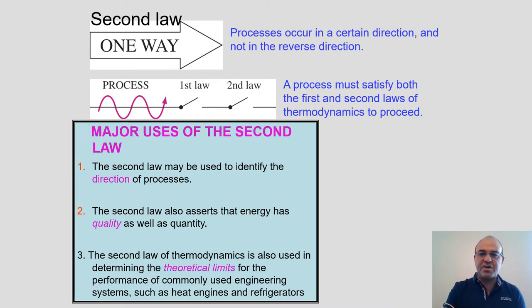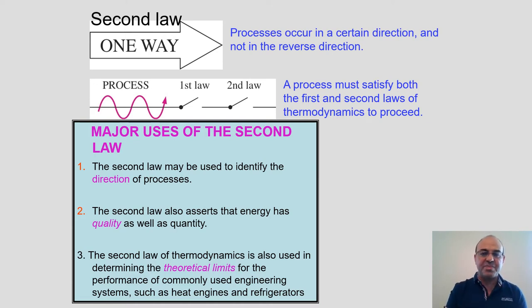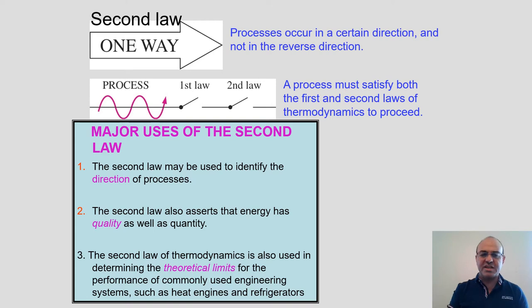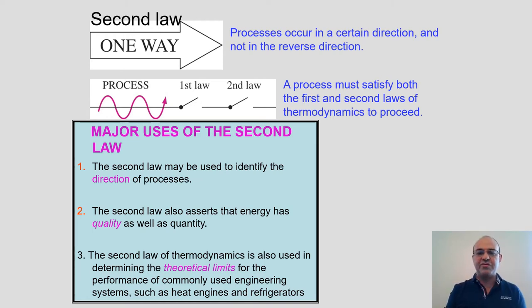The second law tells us that processes occur in a certain direction and not in the reverse direction. For a process to occur, both the first law and the second law of thermodynamics must be satisfied, otherwise the process will not proceed. The major uses of the second law are: first, to identify the direction of processes.